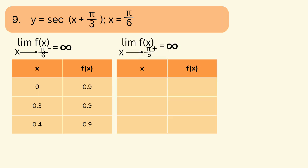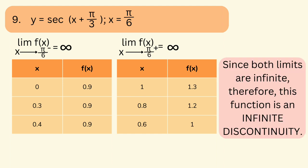For the right side, the limit of f(x) approaches infinity as x approaches π/6 from the right, with x values 1, 0.8, and 0.6. For 1 we get 1.3; for 0.8 we get 1.2; for 0.6 we get 1. Since both limits are infinity, we conclude that the function is an infinite discontinuity.